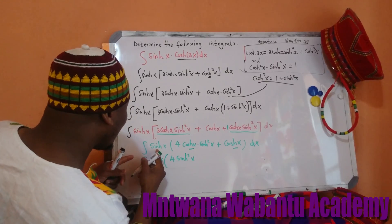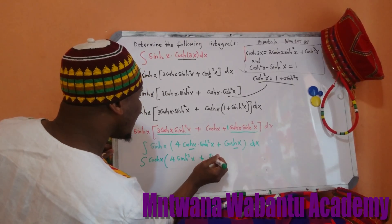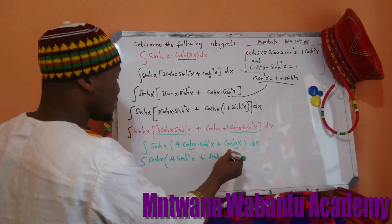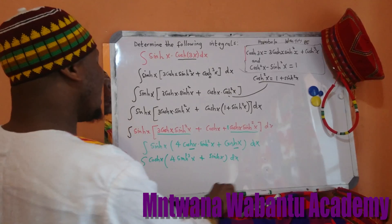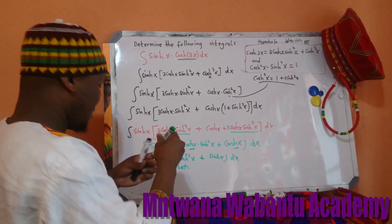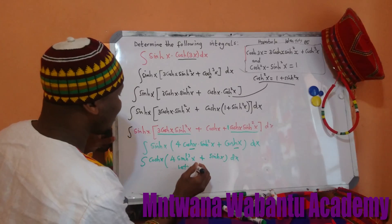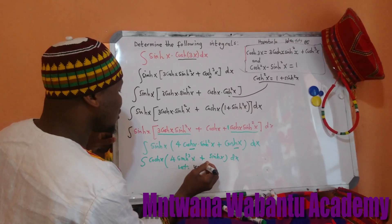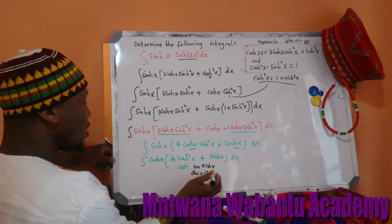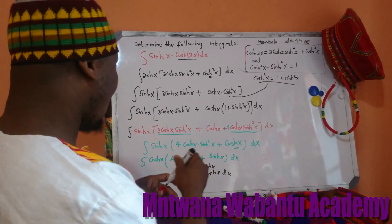So we take cosh out and substitute sinh in. This becomes sinh cubed, and on this side it's plus sinh(x), because cosh and cosh went out. Then we put sinh above. So I want to let u equal sinh(x). And when you differentiate u, it equals cosh(x) dx.